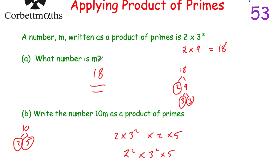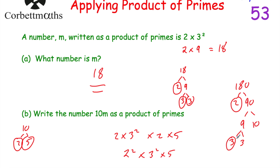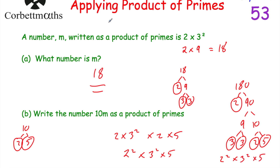There was another way to do it — we said 10m = 180. Starting with 180: 2 × 90, circle the 2. 90 gives 9 × 10. 9 is not prime, so 3 × 3 — both prime, circle them. 10 = 2 × 5 — circle both. So 180 = 2 × 2 × 3 × 3 × 5 = 2² × 3² × 5. Same answer. You could have done it either way.